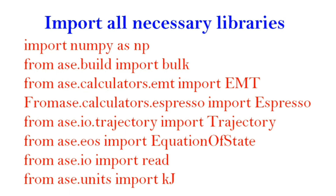In our code we will first import all necessary libraries. We will require numpy to build a structure, bulk to apply potential, and the EMT potential — though in this lecture I will show how to use Quantum ESPRESSO. To trace the trajectory of all atoms we will use import Trajectory. We will use the Equation of State from ASE, and use ase.io to read or write structures. To convert bulk modulus into Pascal we will use ase.units import kJ, which is the inbuilt conversion factor.